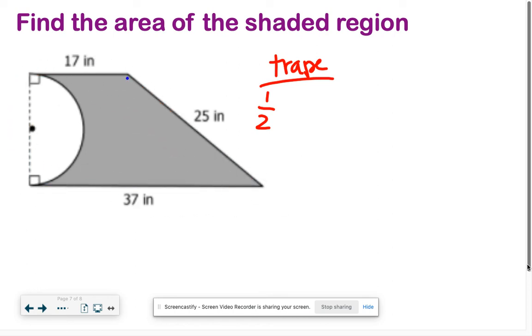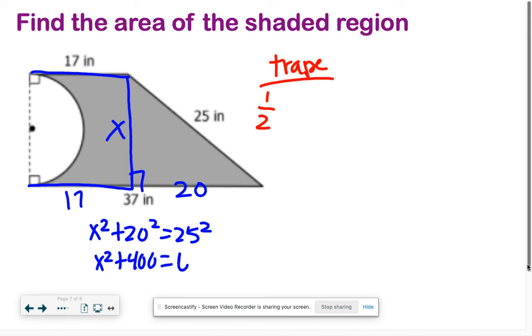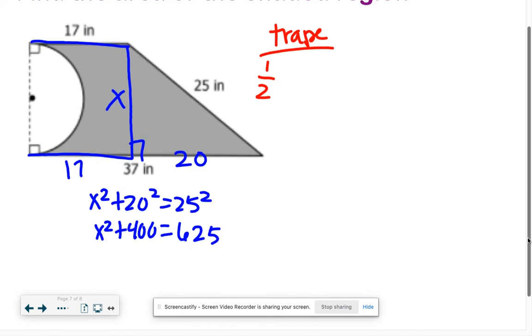We can draw in our height right here. I know from here to here is 17, because it's the same as this guy. So what's left of our 37 if it takes 17 away? It's 20. Now we can do Pythagorean theorem to get our height. We'll have x squared plus 20 squared equals 25 squared. x squared plus 400 equals 625. Subtract away and we should get x squared equals 225, which means x equals 15. Found our height.